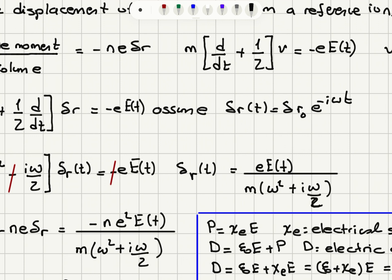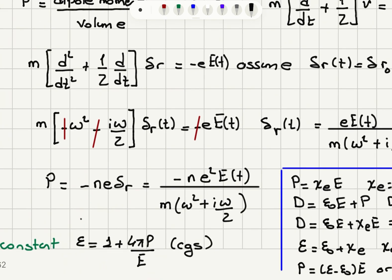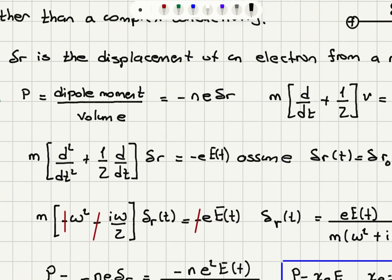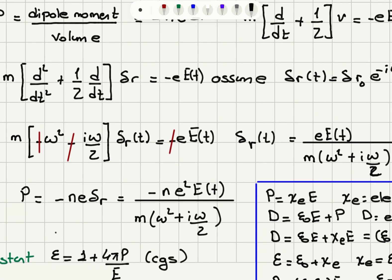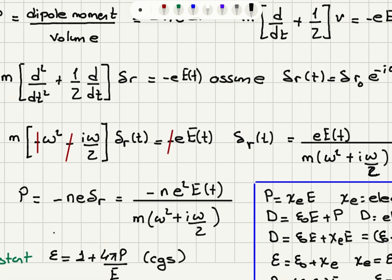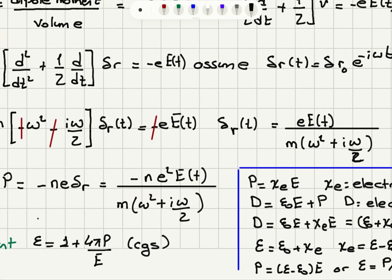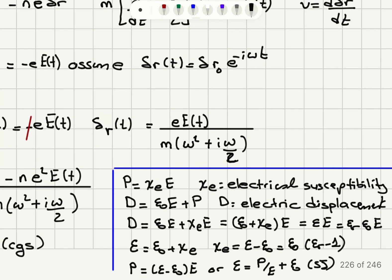The polarization, as discussed earlier, is minus n e times delta R, the distance between charges. Substituting for delta R with the expression in terms of the electric field, it becomes minus n e squared times the electric field divided by m(omega squared plus i omega over tau). To get the complex dielectric constant, we recall from electromagnetism that polarization is related to the electric field by electrical susceptibility: P equals chi_E times E.